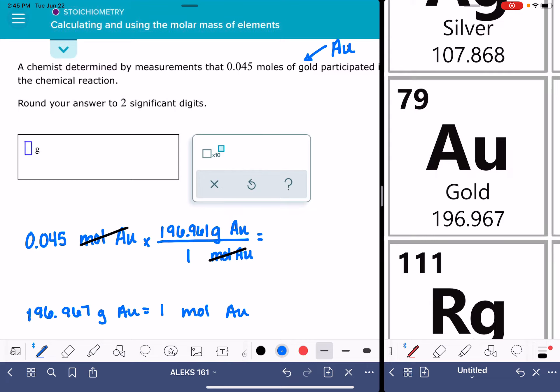0.045 times 196.967. And that gives me an answer of 8.863515. I'm just copying everything from my calculator. The units are grams of gold.